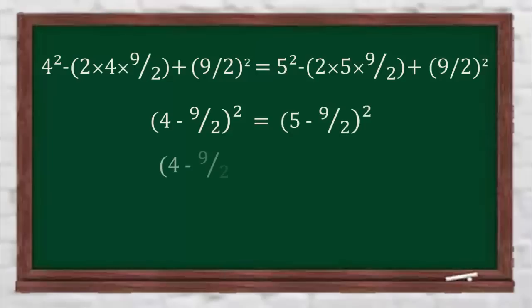Taking the square roots on both sides will give us 4 minus 9 by 2 is equal to 5 minus 9 by 2. After canceling 9 by 2 on both sides, we'll have 4 is equal to 5. And writing 4 as 2 plus 2 will give us a final equation: 2 plus 2 is equal to 5.